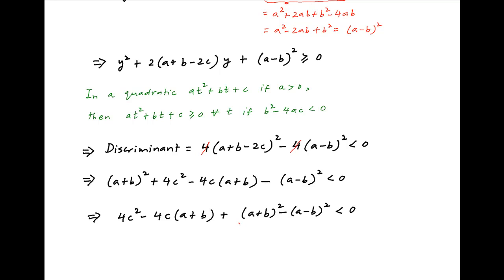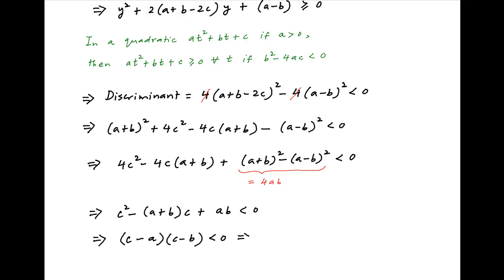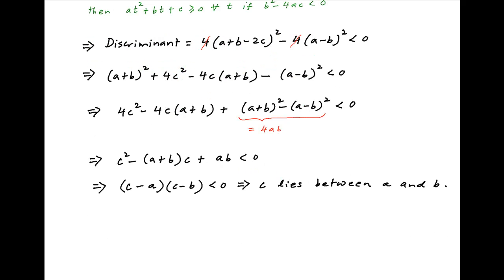On the left-hand side, (a + b)² - (a - b)² = 4ab, so the inequality becomes c² - (a + b)c + ab < 0, which implies (c - a)(c - b) < 0. In other words, c lies between a and b. When a < b, this means a < c < b; when b < a, this means b < c < a. This is the required answer.